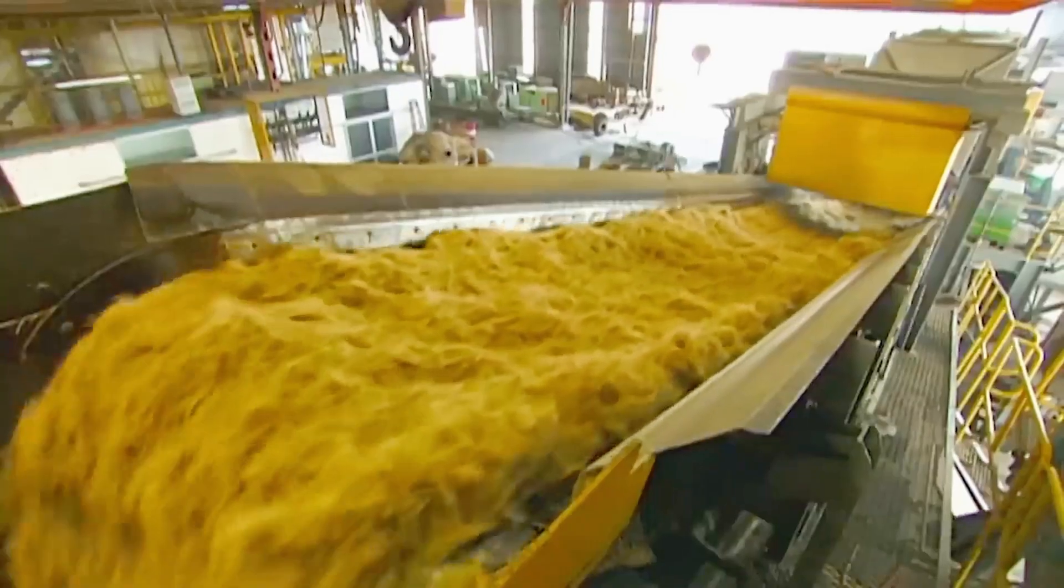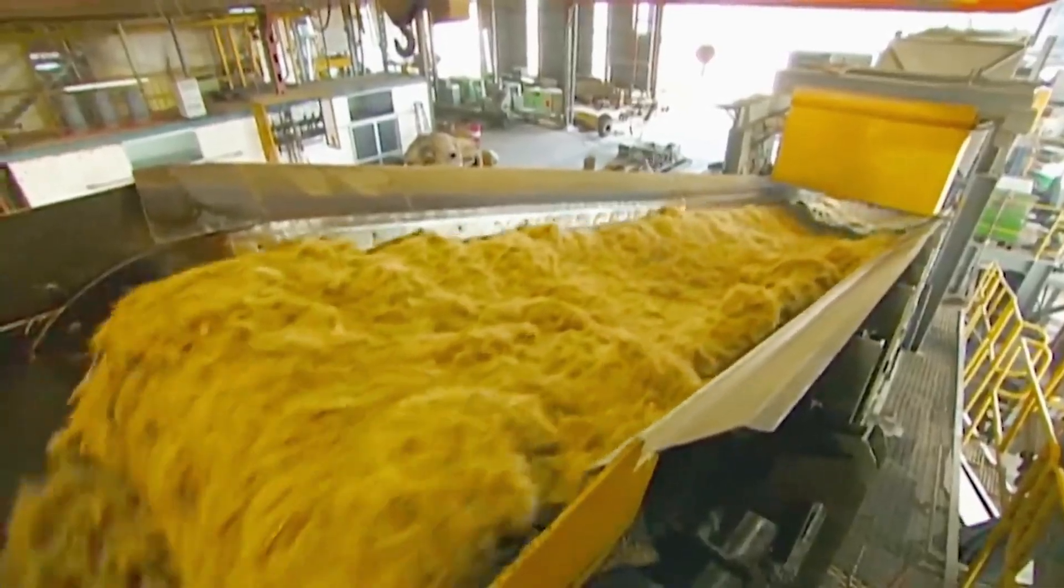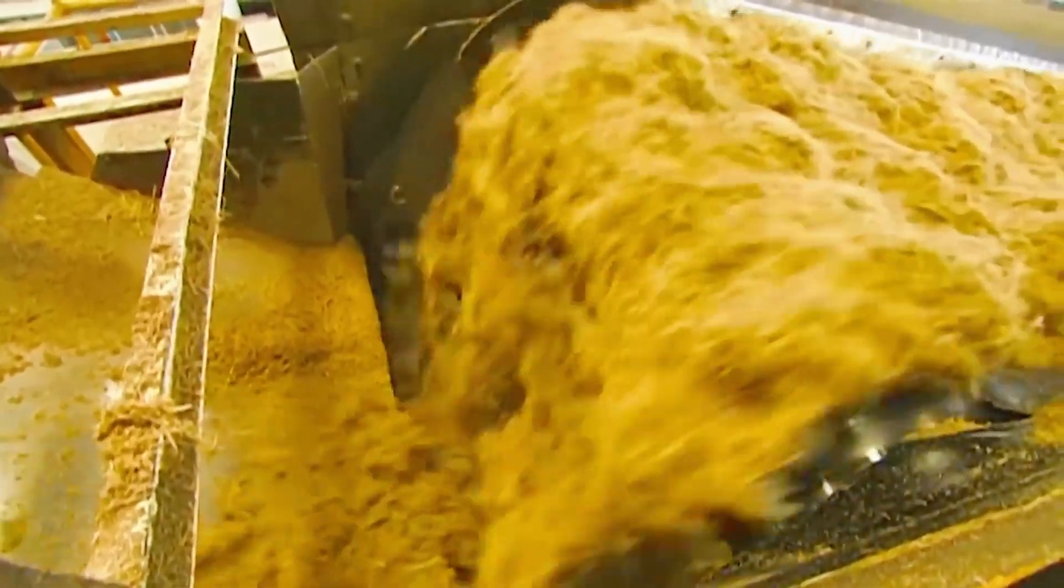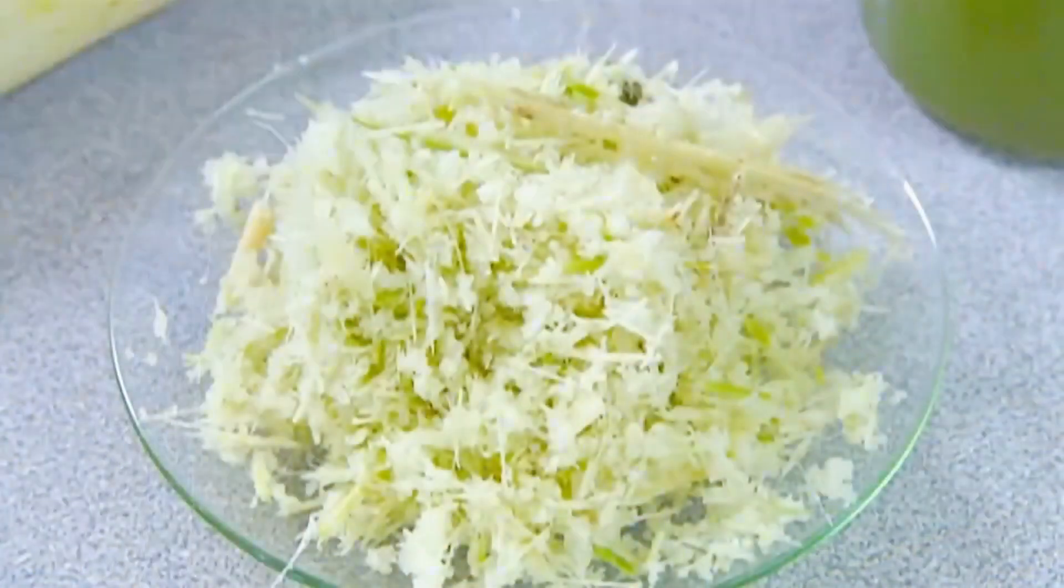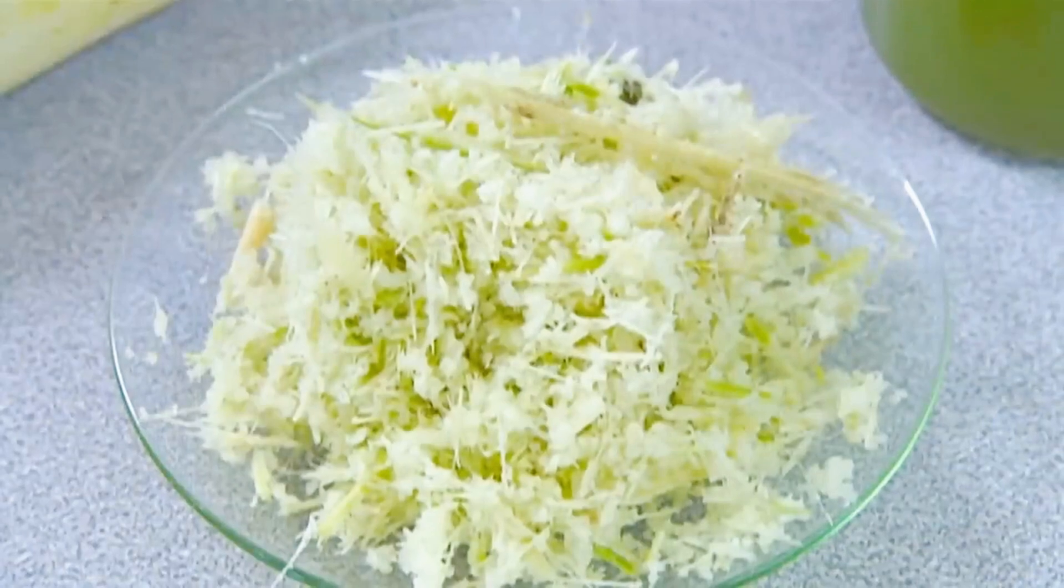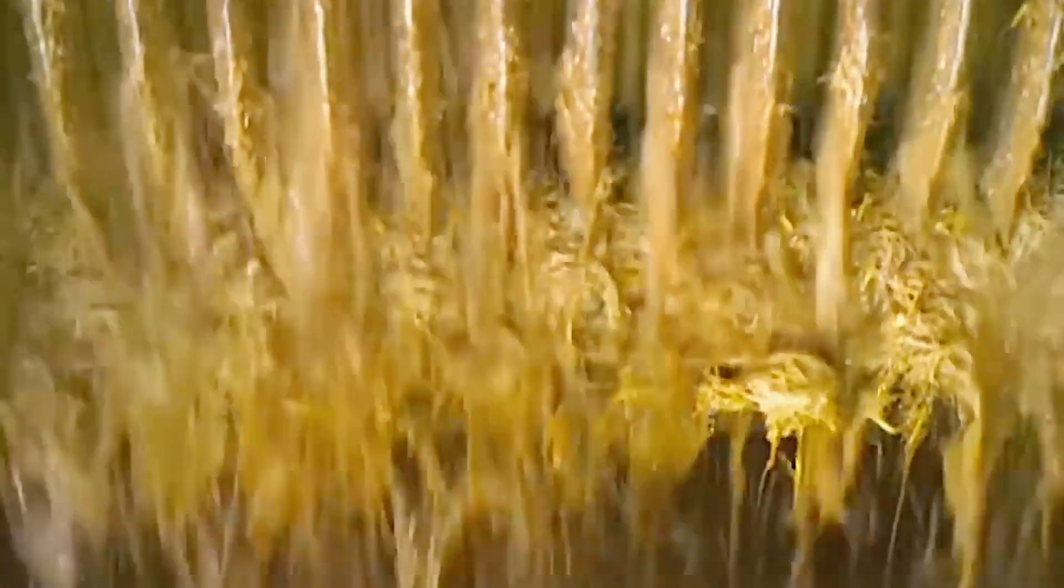The juice that flows out contains a mix of water and sugar, along with some plant debris. To ensure the juice is as clean as possible, it's passed through a series of filters that remove the fibers, leaving behind a relatively clear liquid.